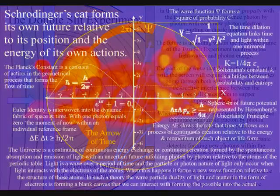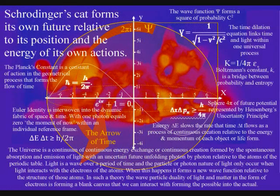All the atoms can be in the form of a cat, with the future unfolding photon by photon, relative to the position and the energy and momentum of the cat.